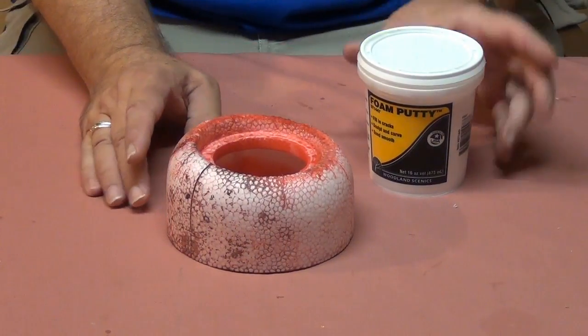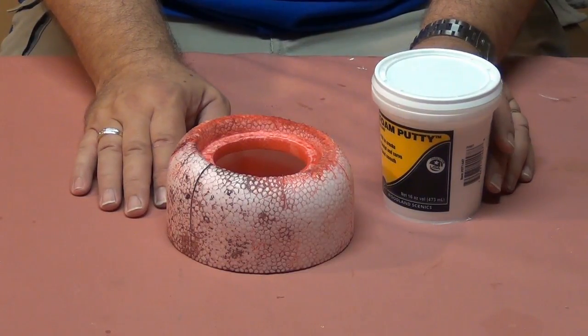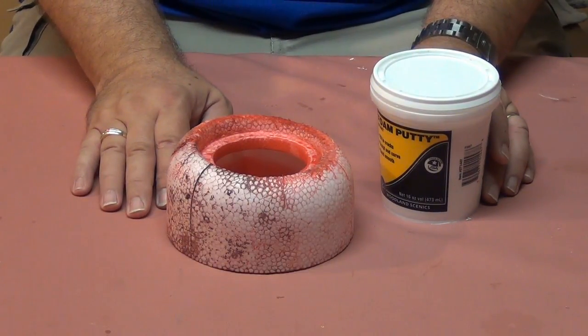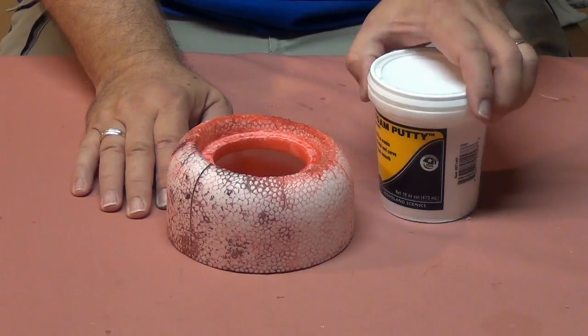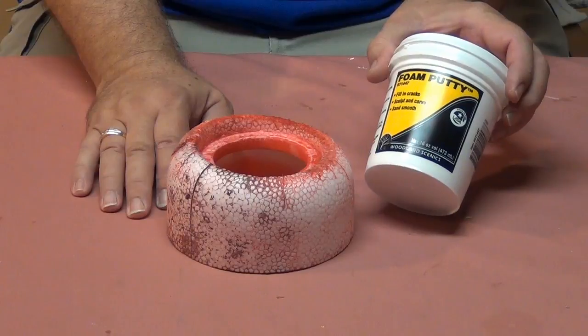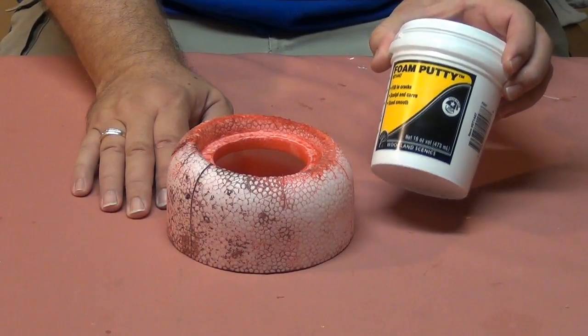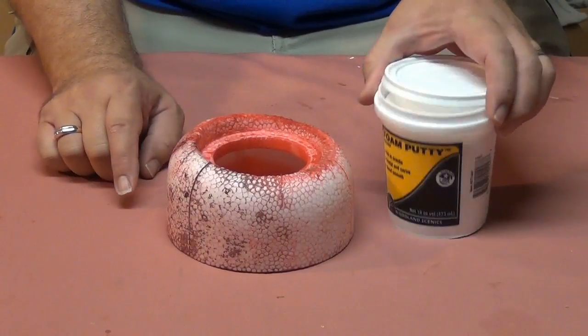Now there are a couple of things you can use. You can get lightweight spackle from a home improvement store, lightweight filler at your hobby store. I just got a tub of this foam putty the other day. I hadn't used it before, so I've got that and that's what I'm going to use in the buildup area here on the cowling.